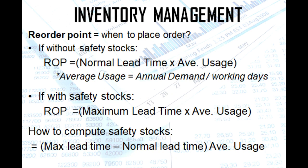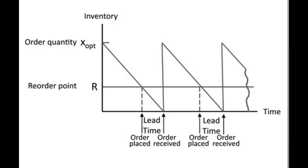Reorder point answers the question: when to place an order — while EOQ answers how many units to order. We compute it two ways depending on whether you maintain safety stocks. Without safety stocks, ROP equals normal lead time multiplied by average usage, where average usage equals annual demand divided by working days. With safety stocks, ROP equals maximum lead time multiplied by average usage. Safety stock is computed as: maximum lead time minus normal lead time, multiplied by average usage. You will only order when the reorder point is reached, ensuring no shortage or oversupply of goods.